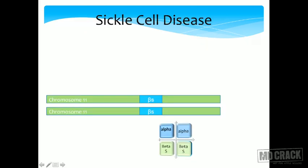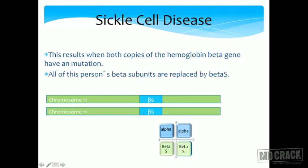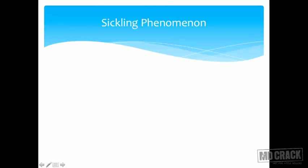In sickle cell disease, both copies of the hemoglobin beta chain have a mutation — both chromosome 11s carry the point mutation where thymine replaces adenine. All of this person's beta subunits are replaced by beta S, and their hemoglobin is 100% HbSS (2 alpha, 2 beta S). This person is said to be homozygous for sickle cell disease.